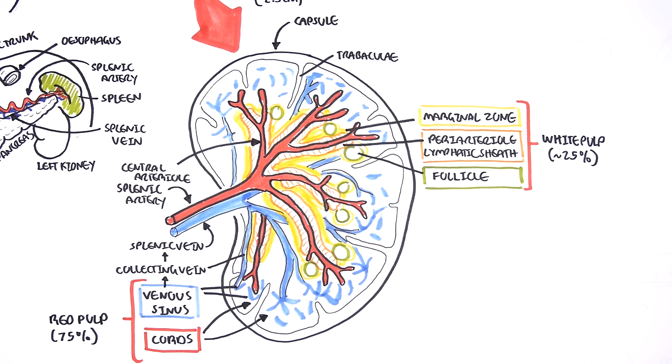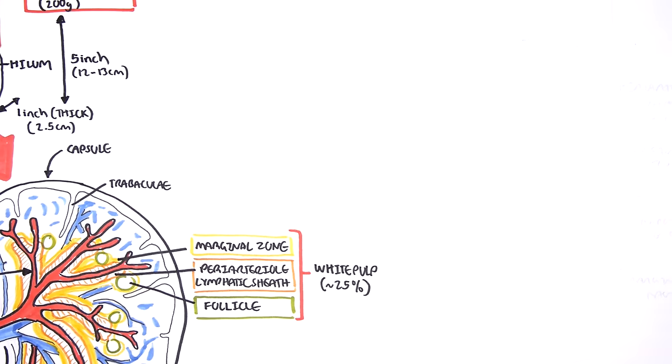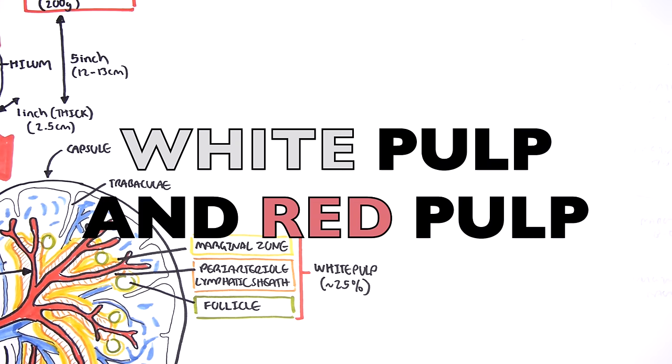We know this because if we look at the blood of someone with no spleen, there is an increased number of abnormal red blood cells in the circulation — for example, red blood cells with Howell-Jolly bodies, which are remnants of the nucleus. So remember, the spleen has a white pulp and a red pulp.